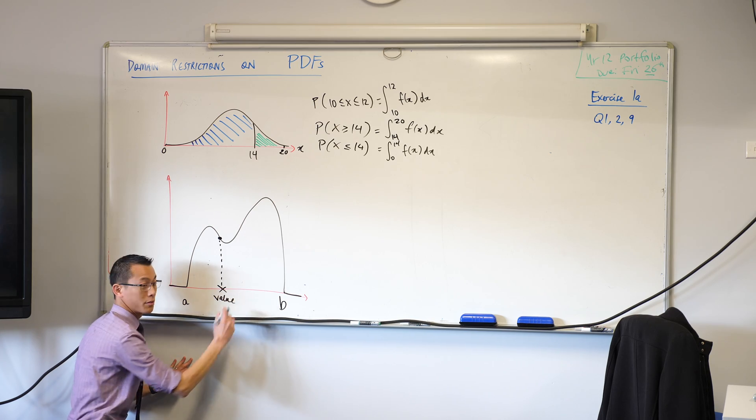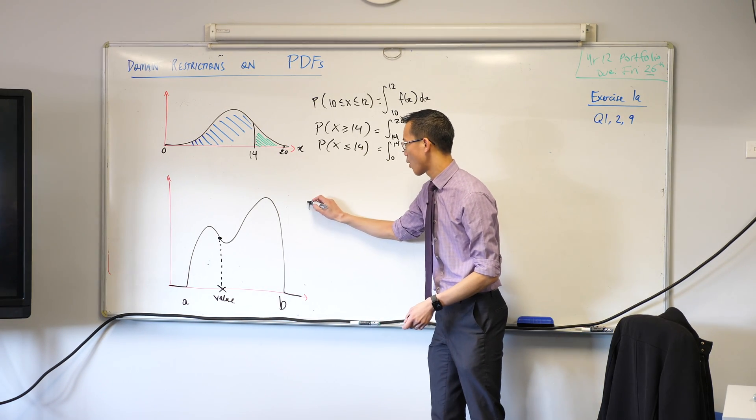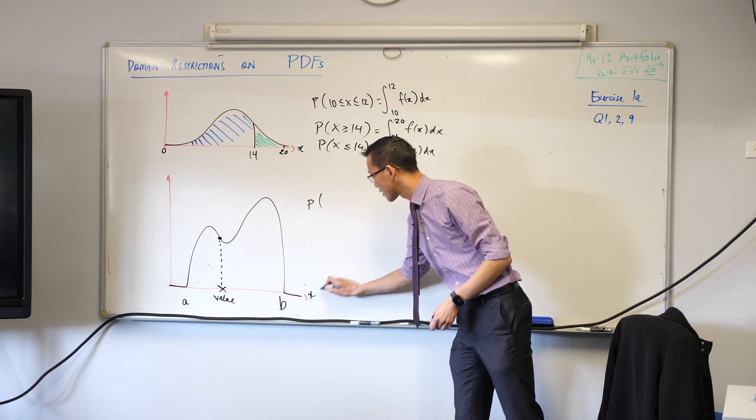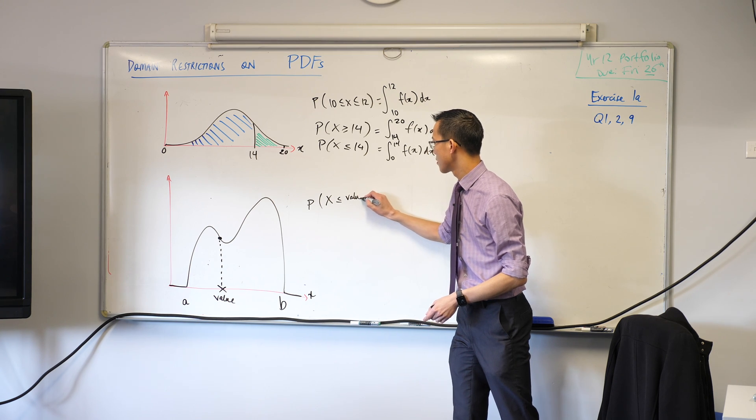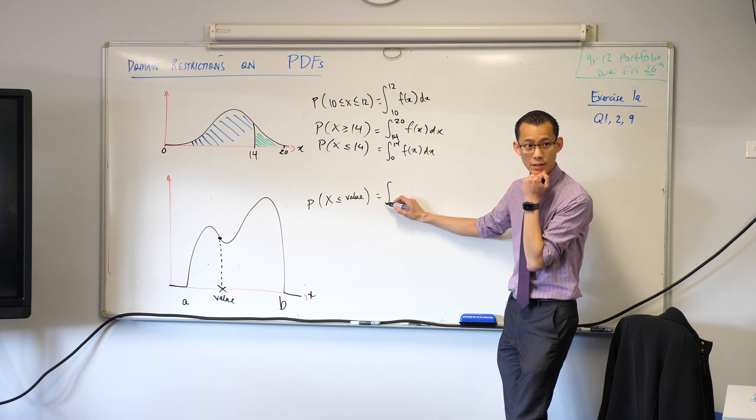So if you have some given value, any value you like, I'm just gonna call it value. Can you form for me the integrals that correspond to the probability of - this is an x-axis over here - of the x value being less than that value? What would be the integral that I form? Your integrand.